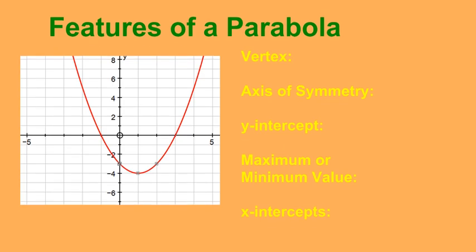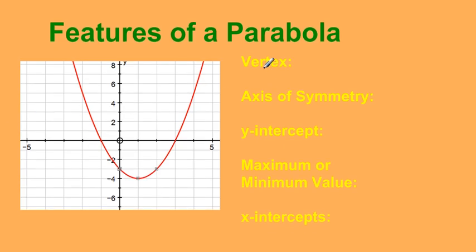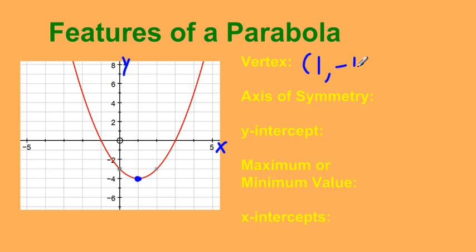Now we'll look at a graph of a parabola and identify the vertex, axis of symmetry, y-intercept, max or min value, and x-intercepts. The vertex is the point where the parabola changes direction. Reading the graph, I go along x to 1 and down to negative 4, so my vertex is (1, negative 4). The vertex is always listed as a coordinate with brackets: x-coordinate, comma, y-coordinate.